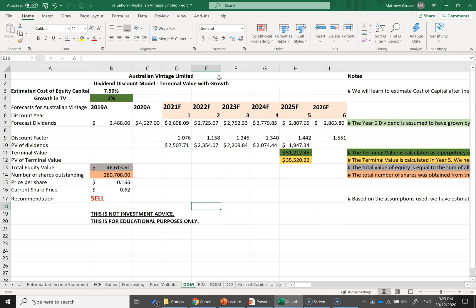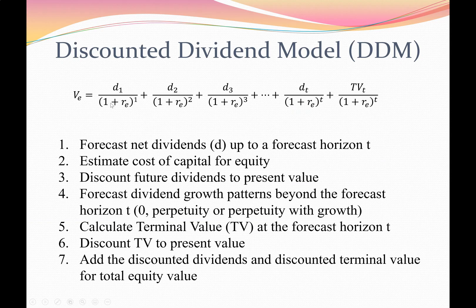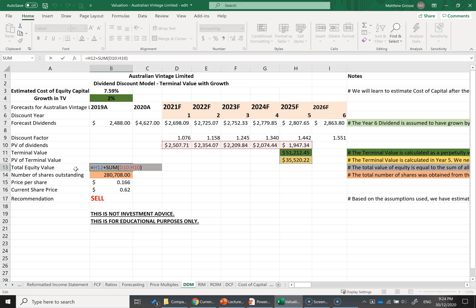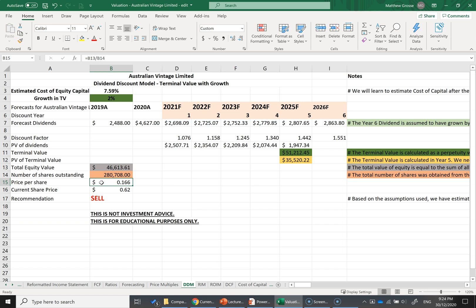To recap, we've followed the dividend discount model through all seven steps, essentially applying the core formula. Dividends come from the forecast template, you estimate the cost of capital for equity, and it comes down to the terminal value calculation. For terminal value you have three choices: zero (limited life or bankruptcy), the same dividend every year in the future (divide by cost of equity), or a dividend with growth — which is the demonstration we just went through. Add up all the discounted dividends to get total equity value, then divide by number of shares for estimated price per share.